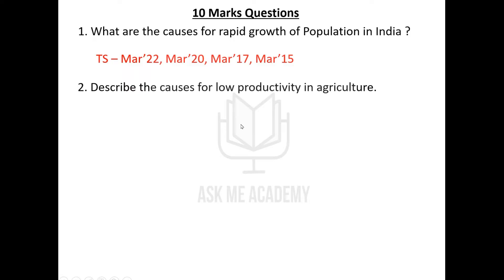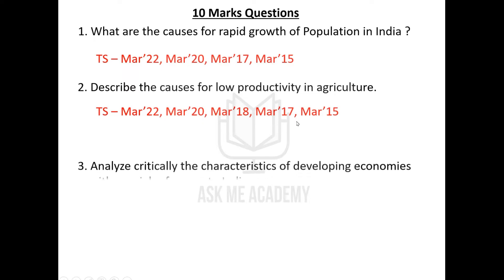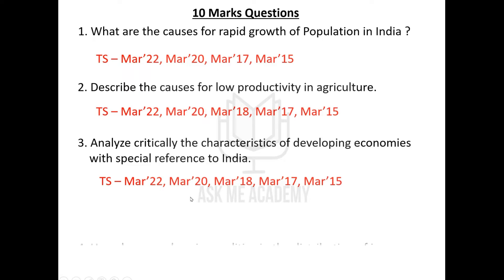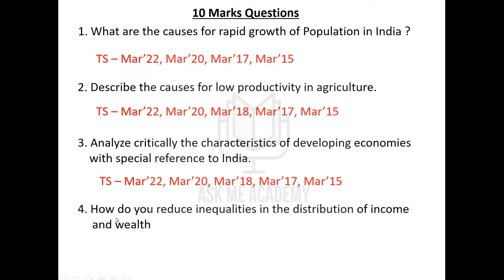The second question is: Describe the causes of low productivity in agriculture. This has been asked five times — it was missed only in March 2016, so it is very important. The third question is: Analyze critically the characteristics of developing economies with special reference to India. This has also been asked five times — a very important question.